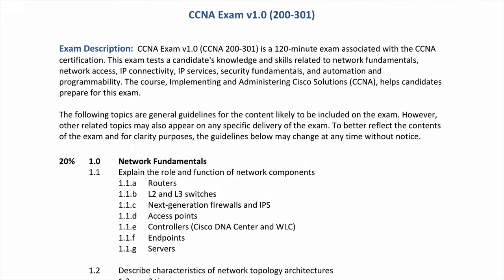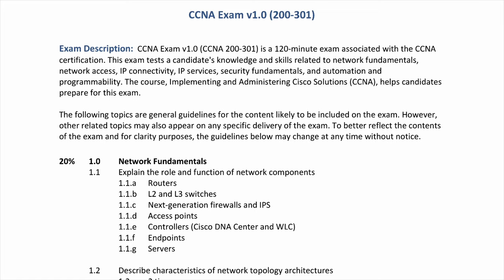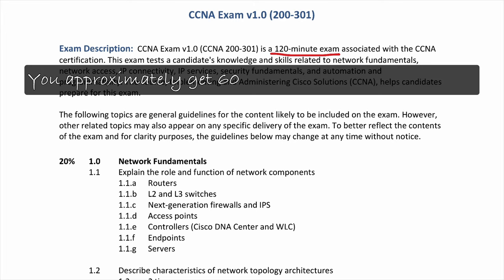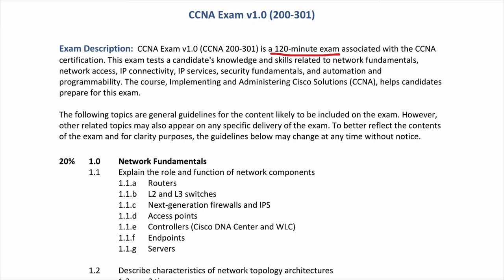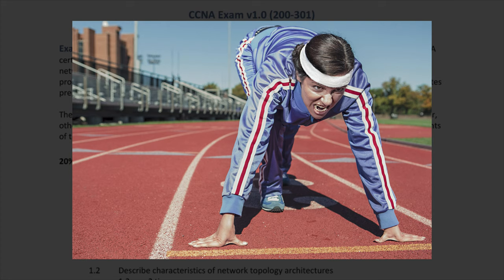Looking at all the topics here on the exam, if you have never taken a Cisco exam before, a couple of things to keep in mind: it's a 120-minute exam — so that's two hours — and you roughly get around a minute and a half to two minutes per question, depending on how many questions you end up getting. It's also an adaptive exam, which means it intelligently detects how you're answering the questions and then presents you the questions accordingly. That's not to say it's designed to make you suffer, but rather that you need to be prepared well ahead of time so you can actually do a great job on the exam.